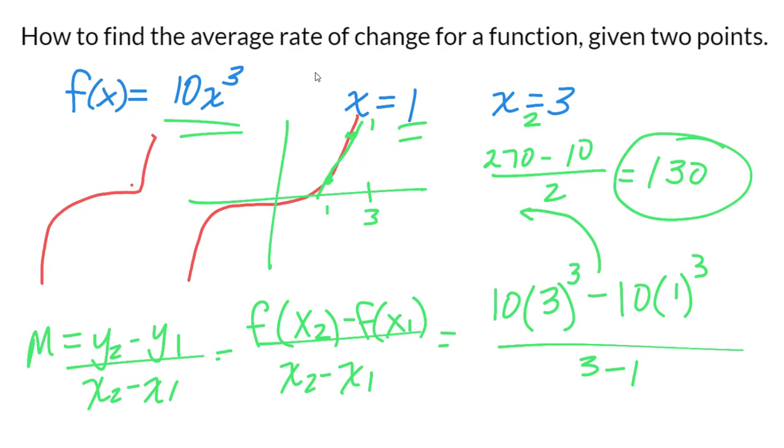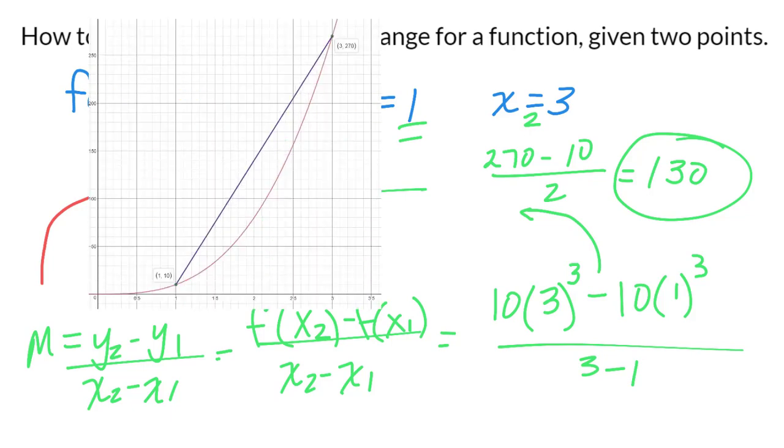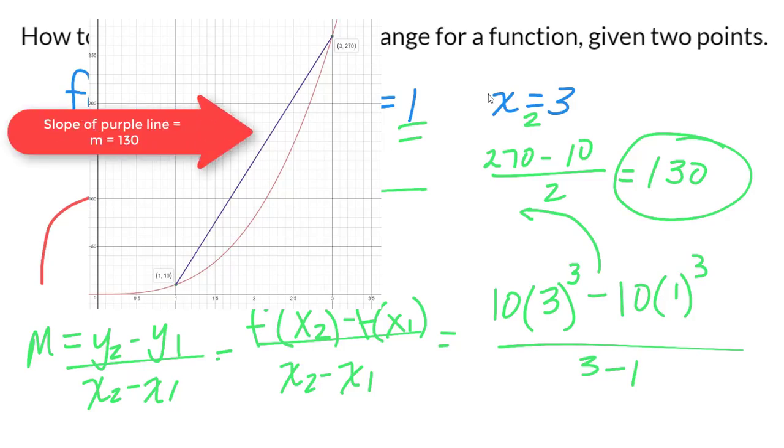So whenever they give you a function and ask you to find the average rate of change with two values of x, the numerator is just plugging in those values of x, and the denominator is just the difference in x. That 130 is the actual slope of the line if you connected 1 and 3.